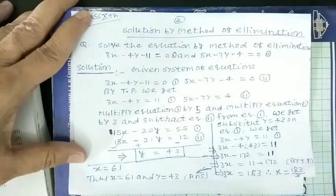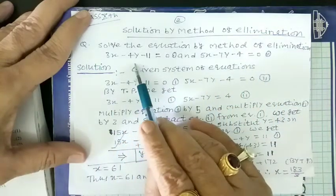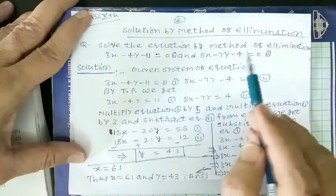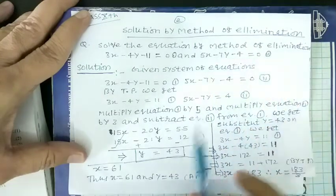Understand with the help of one example. Solve the equation by method of elimination: 3x minus 4y minus 11 is equal to 0 and 5x minus 7y minus 4 is equal to 0.